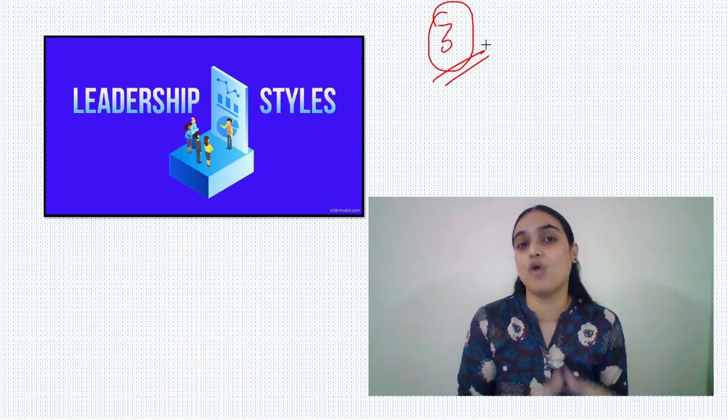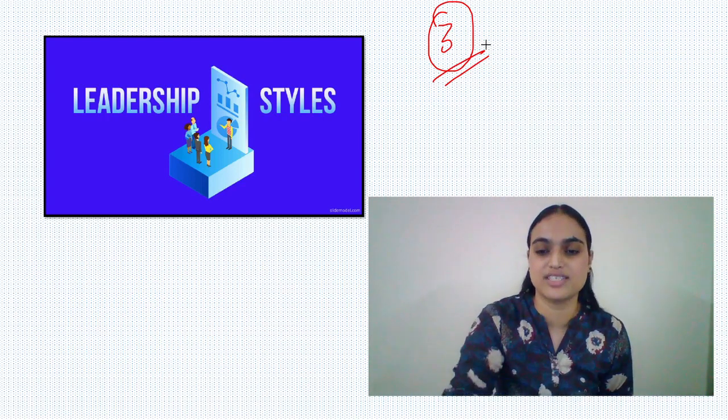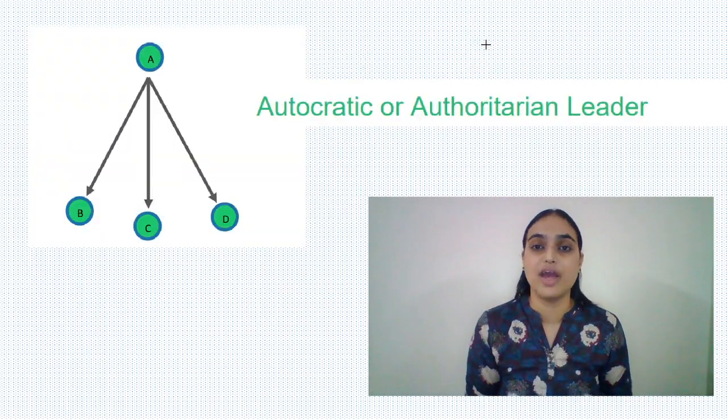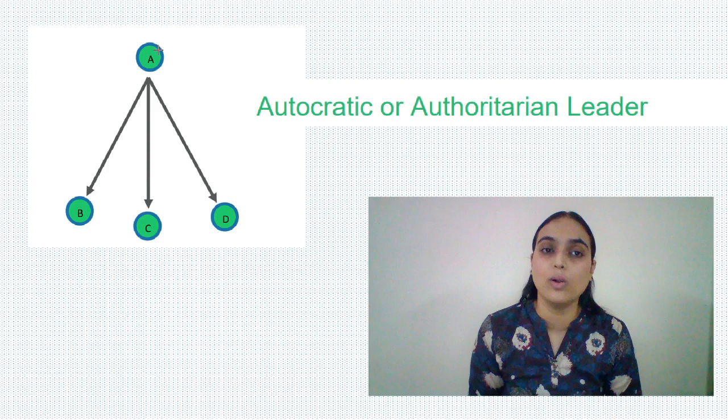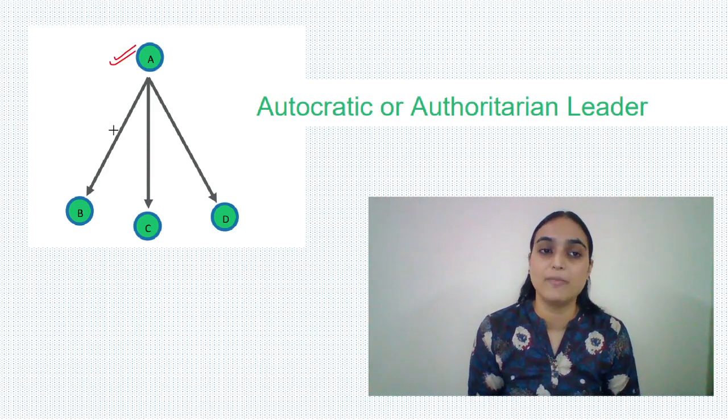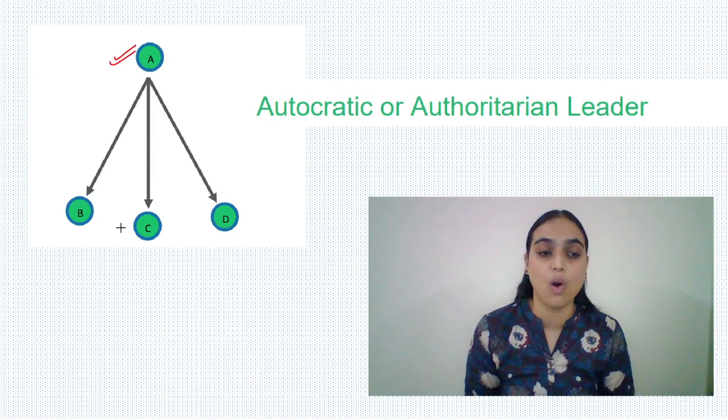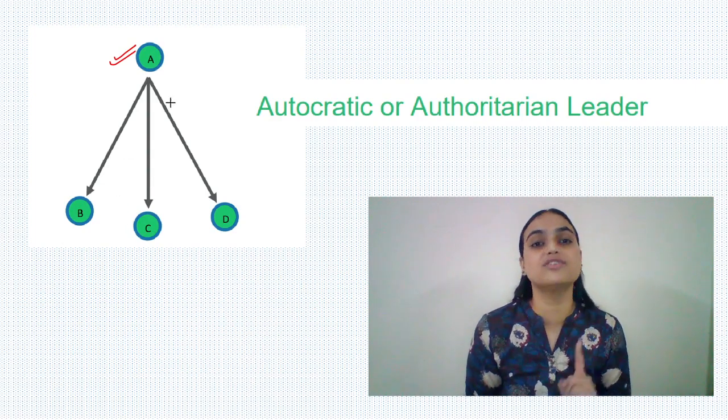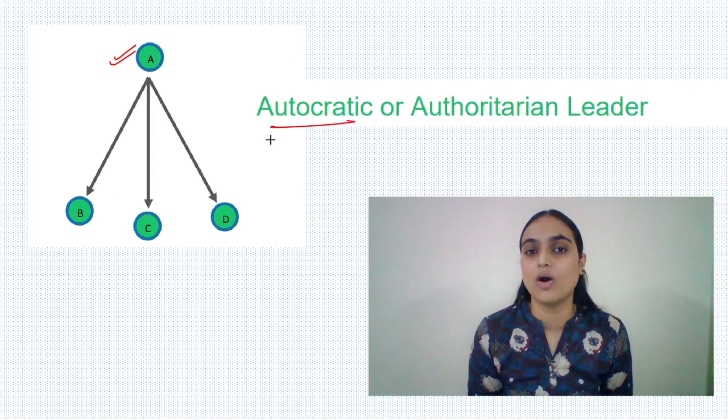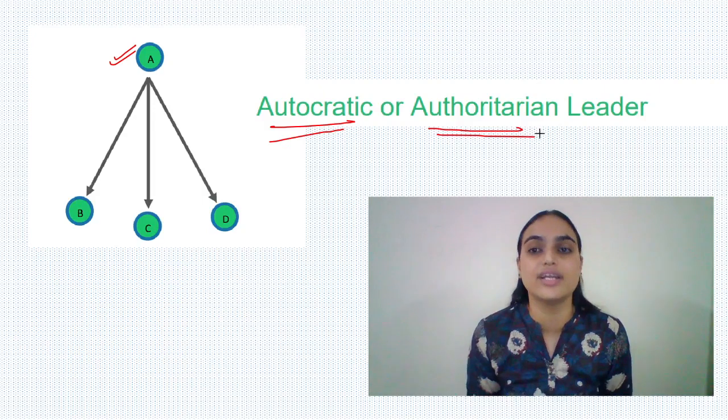Now, telling the formal names of each of these three styles. The first one where I, as a leader, I'm taking all the decisions and communicating them to the subordinates. They have to follow all my instructions. This is the first style which we call the autocratic or the authoritarian leadership style.